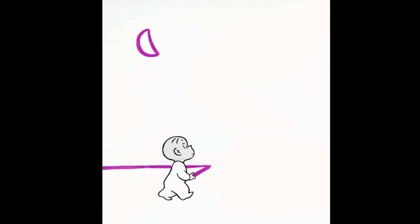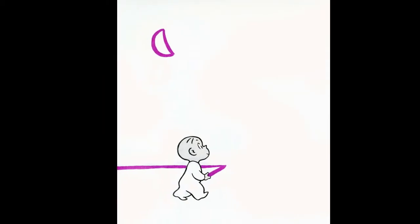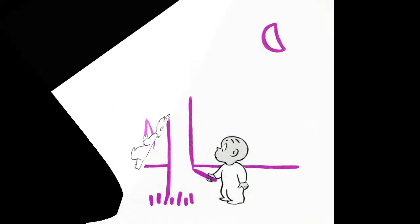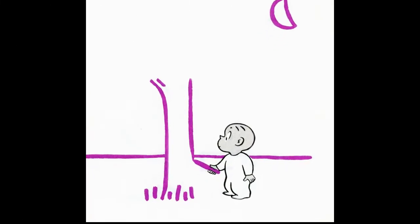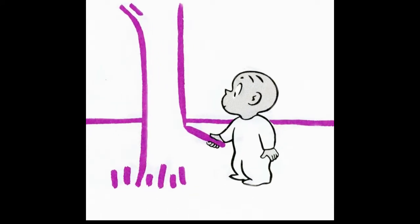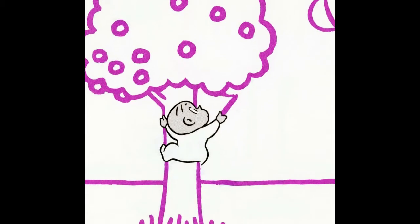The shortcut led right to where Harold thought a forest ought to be. He didn't want to get lost in the woods, so he made a very small forest with just one tree in it. It turned out to be an apple tree.